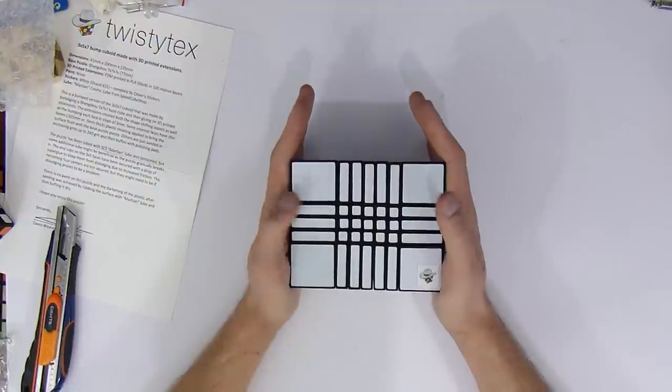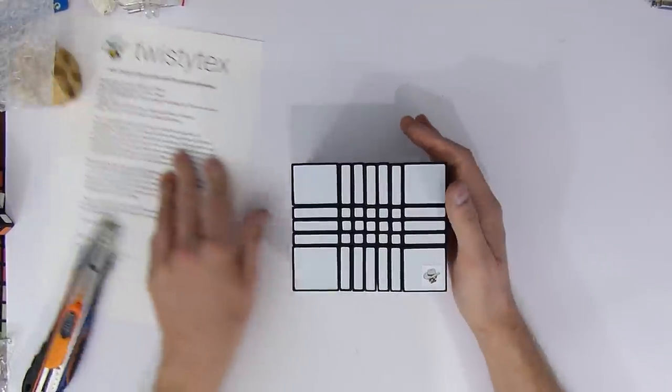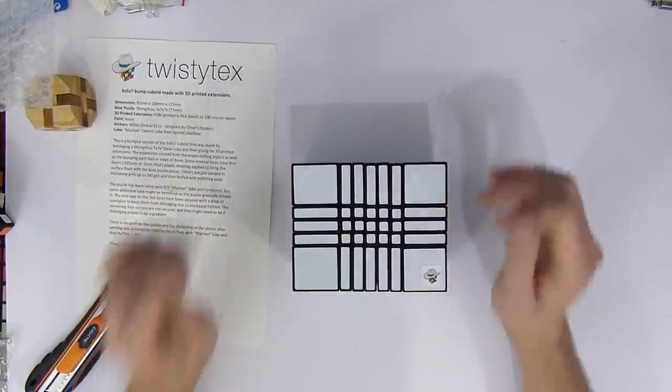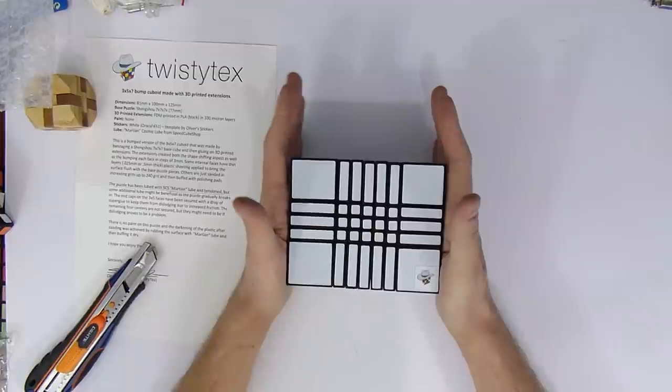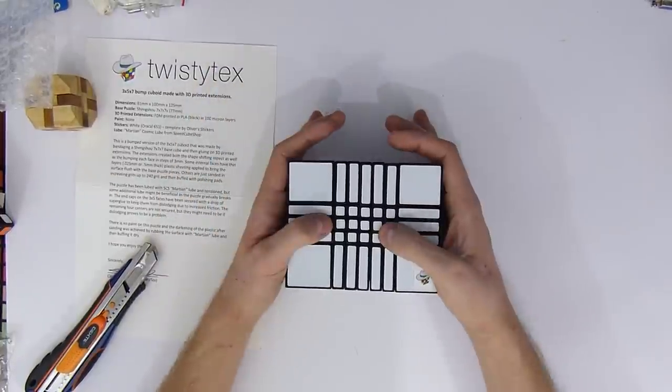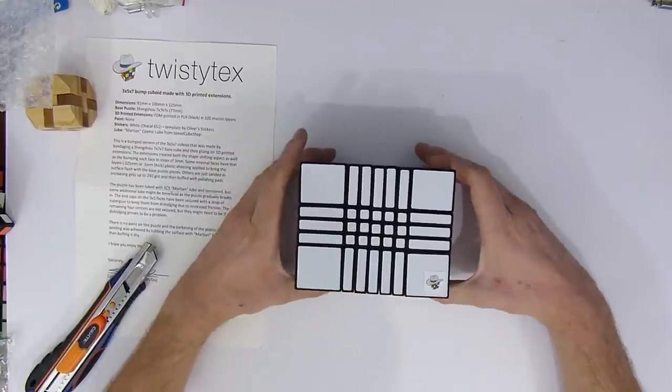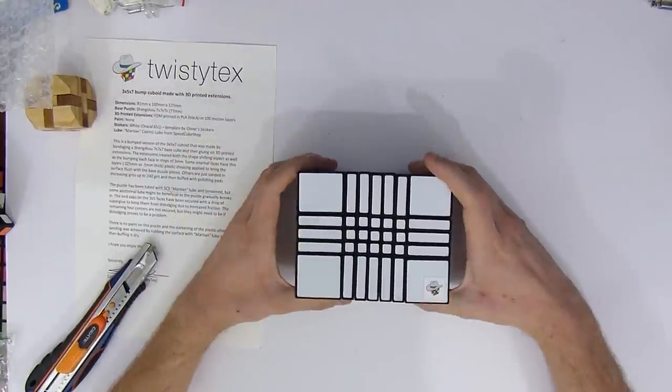So, this is the 3x5x7 by Casey Weaver, aka Twisty Tex. Feel free to check out his channel. I've put the link in the description below. He is an amazing modder, so go check him out. And if you enjoyed this video, feel free to subscribe to my social networks as well. Also in the description below. And yeah. So, enjoy the end of your weekend, and I'll see you next week with some more videos.